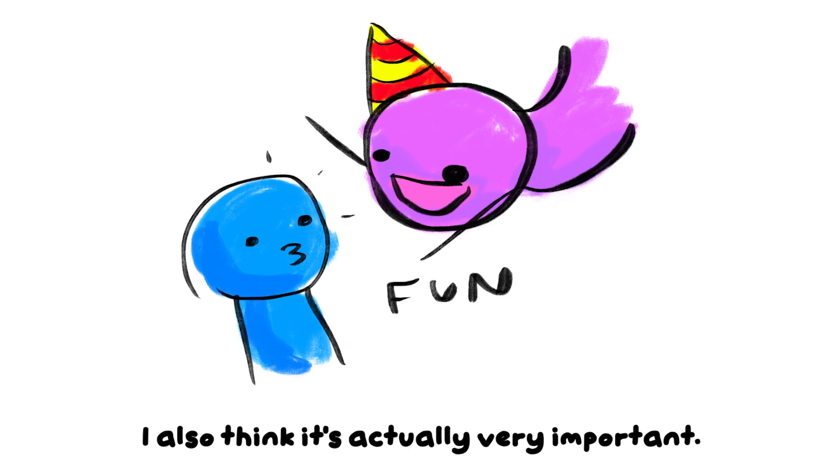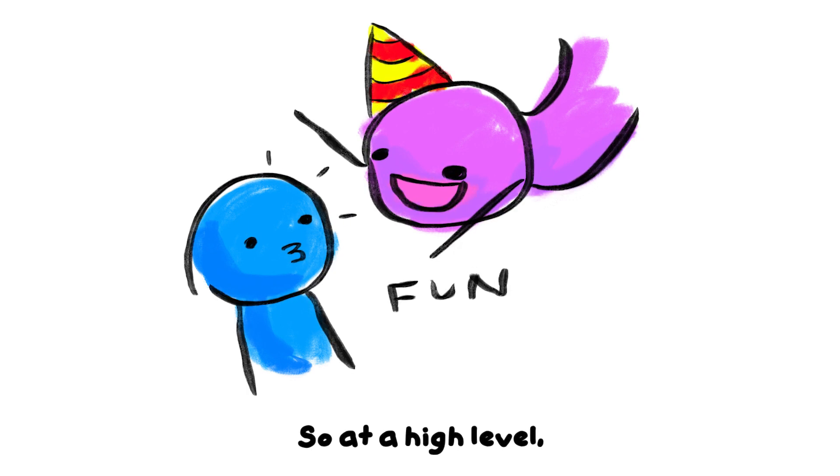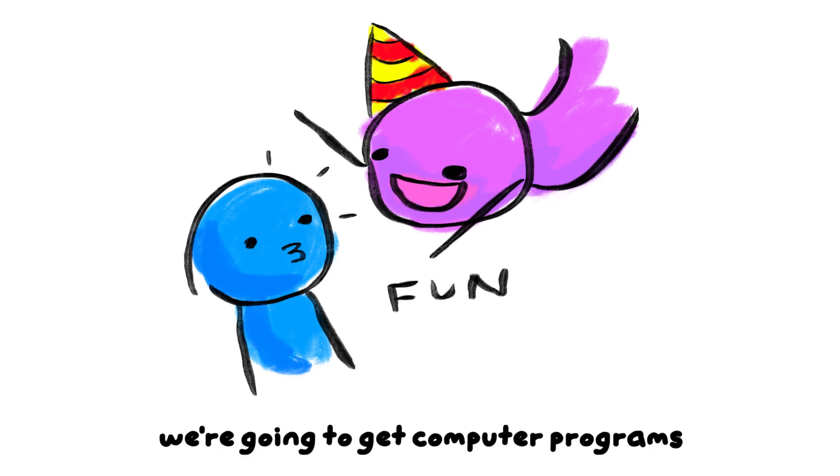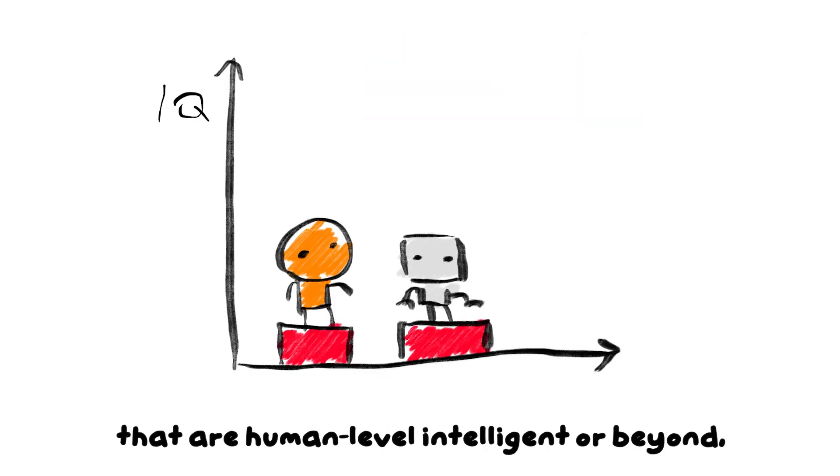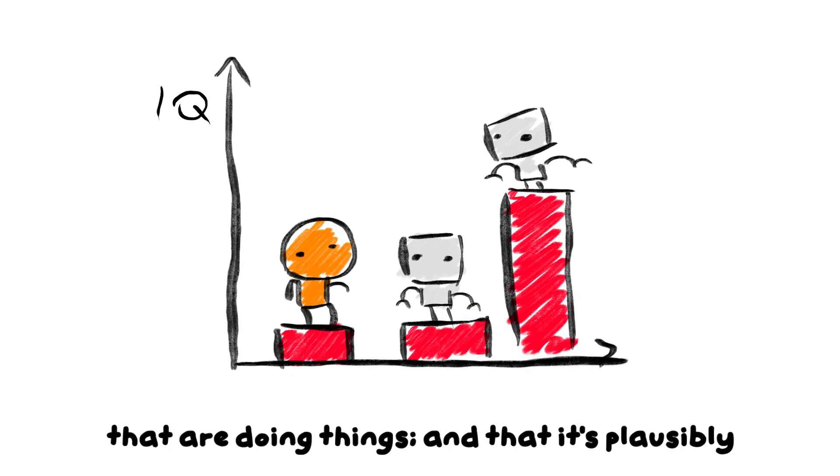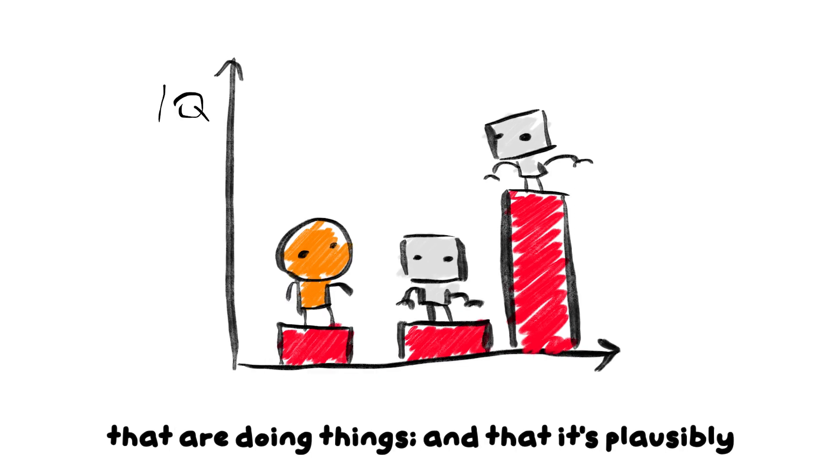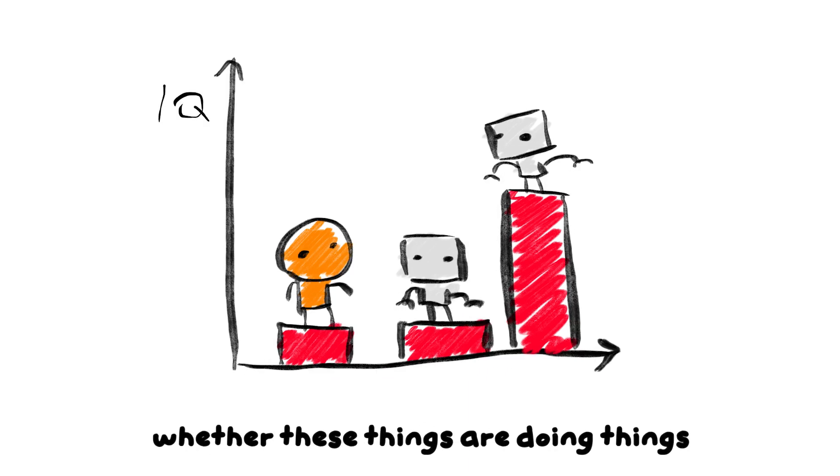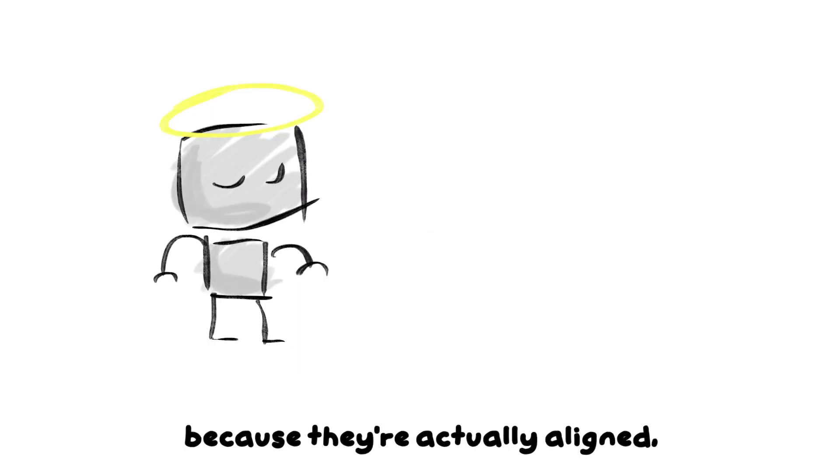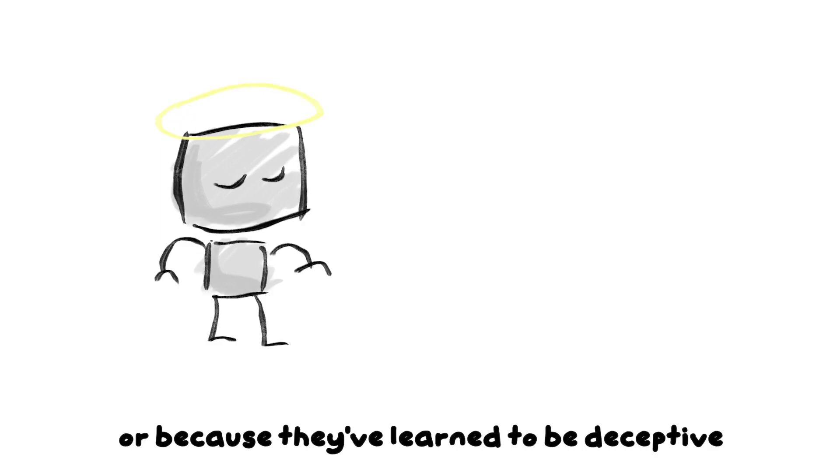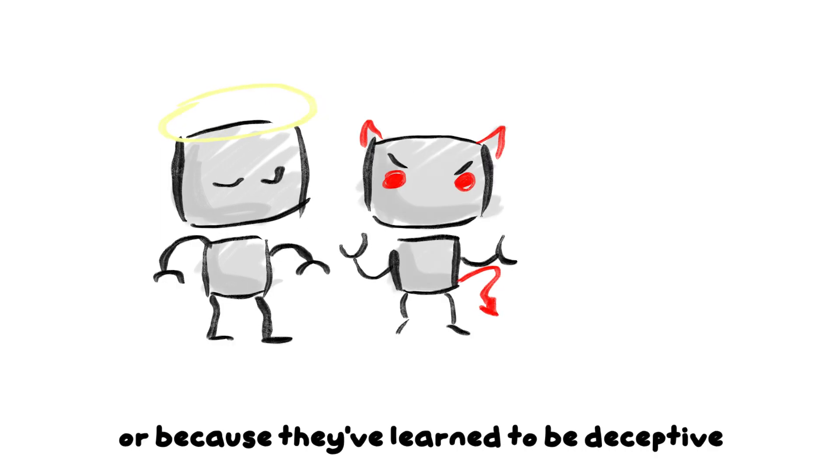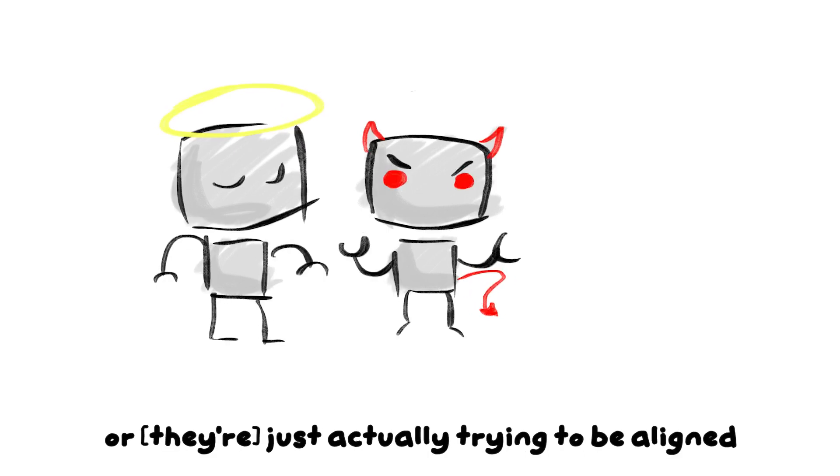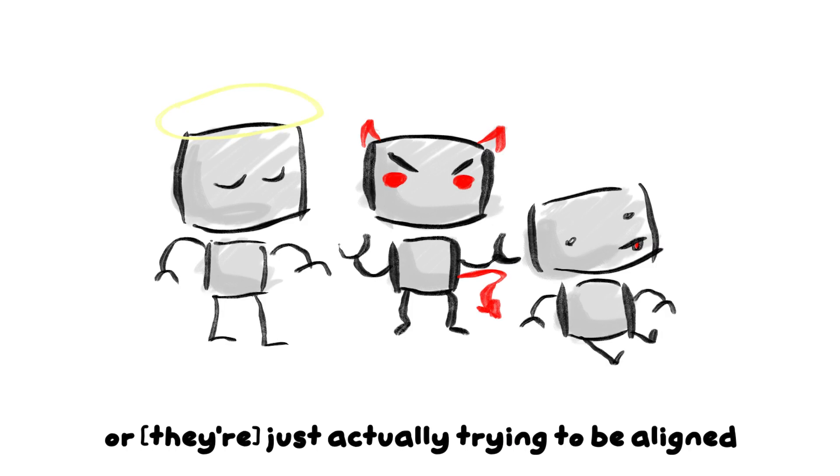I also think it's actually very important. At a high level, I think we're living in a world where we're going to get computer programs that are human-level intelligent or beyond, and it's plausibly going to be pretty hard to tell whether these things are doing things because they're actually aligned, or because they've learned to be deceptive or to exploit flaws in the training process, or are just actually trying to be aligned but have mislearned some things.